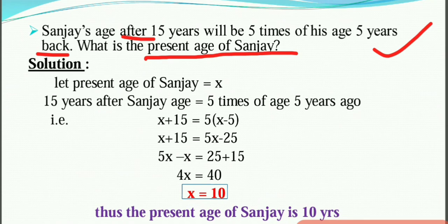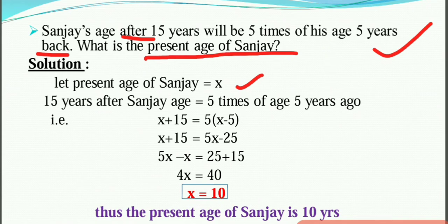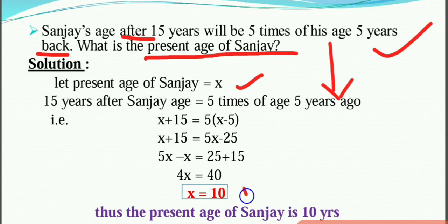We will calculate the present age of Sanjay. Sanjay is 15 years — after 15 years his age is 5 times his age 5 years ago. So we set up the equation: present age plus 15 equals 5 times the present age minus 5, and we solve for the present age.